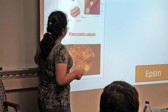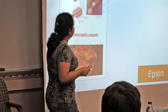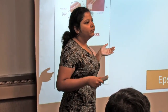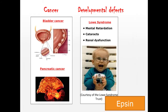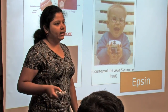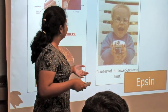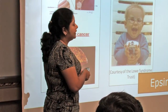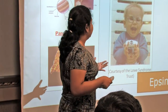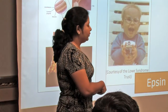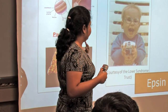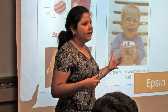At this point, we are also trying to use endocytosis for targeted drug delivery to bladder cancer cells. Epsin is also important in developmental defects — for example, a disease called Lowe Syndrome that affects children. These children are born with cataracts and have to undergo surgery right after birth. They have mental retardation and kidney dysfunction that aggravates with age, and they rarely survive their teens. We are working with the Lowe Syndrome Trust and hoping to understand this disease and possibly identify therapeutic agents.